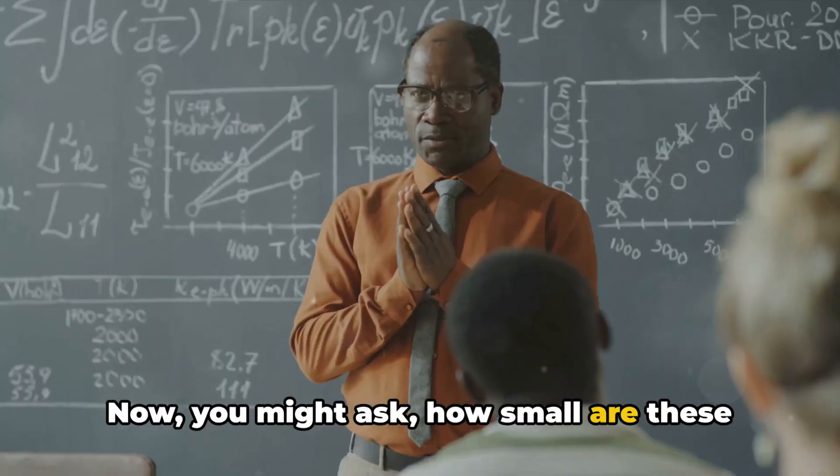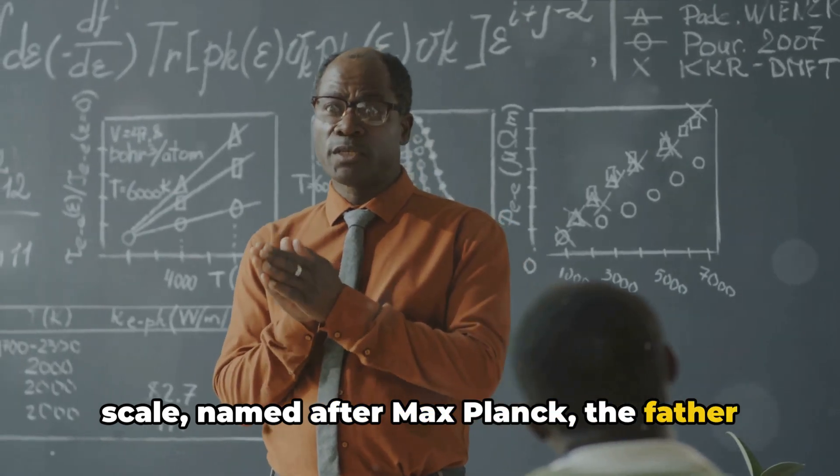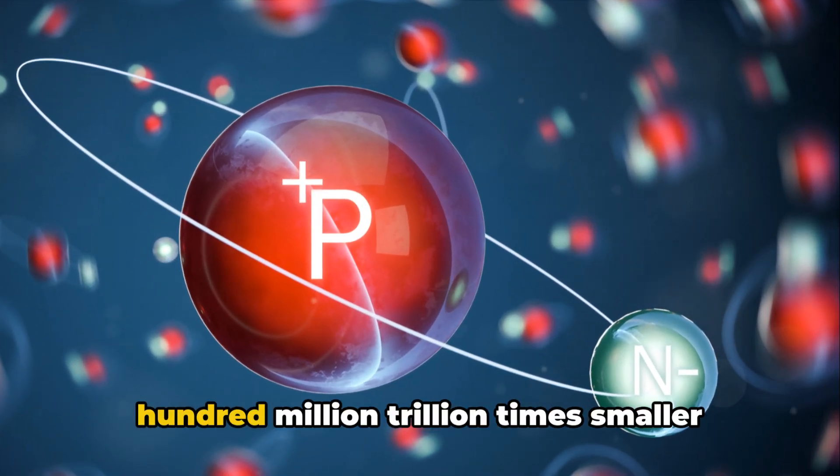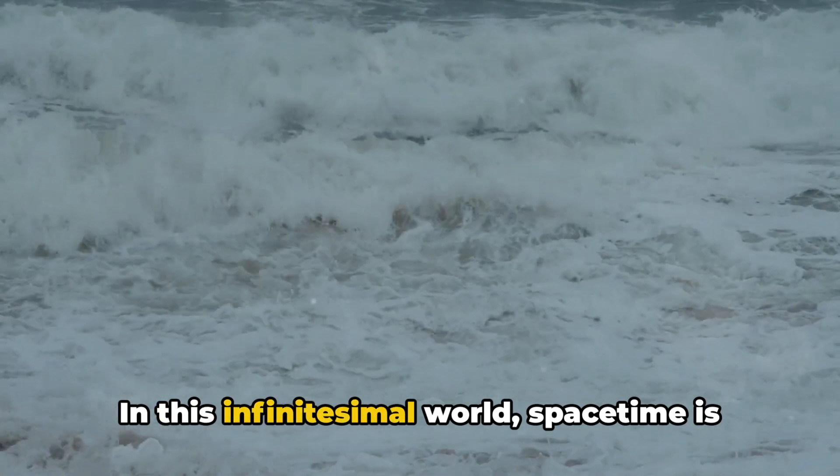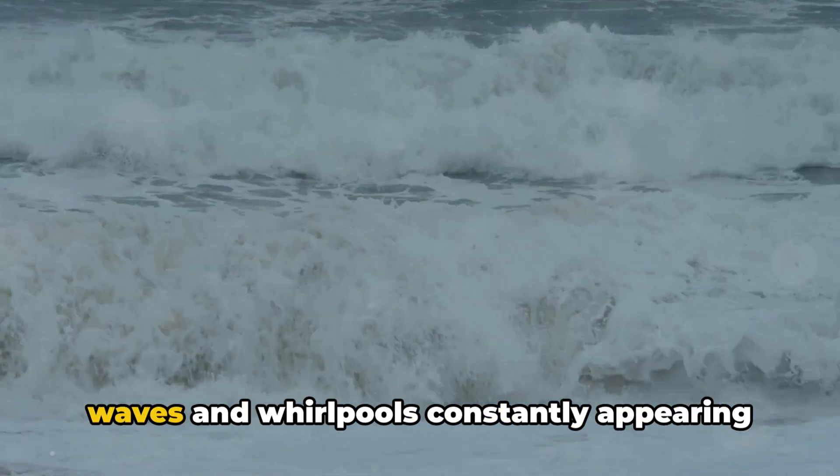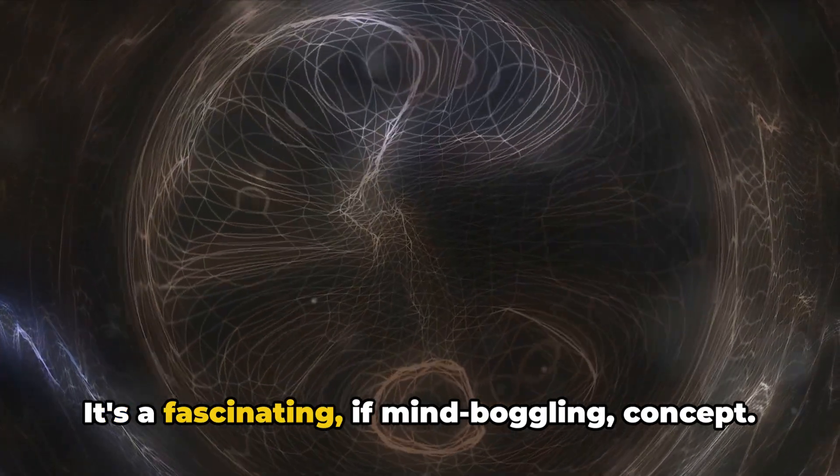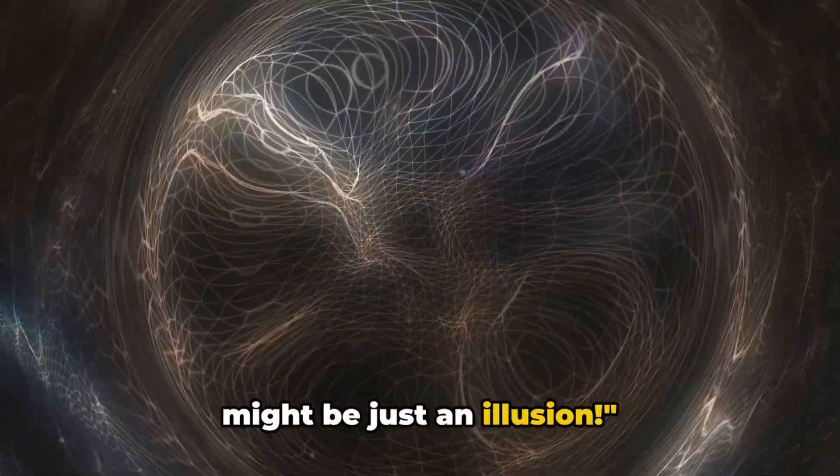Now, you might ask, how small are these scales? We're talking about the Planck scale, named after Max Planck, the father of quantum mechanics. This is a realm so tiny it's about a hundred million trillion times smaller than a proton. In this infinitesimal world, space-time is not a still lake but a stormy sea, with waves and whirlpools constantly appearing and disappearing. It's a fascinating, if mind-boggling concept. So, the smooth space-time we perceive might be just an illusion?